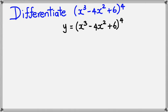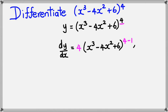Now what do I do here? Bring the power down. So dy/dx would equal... Well there's my 4, it's going to come right in front. 4 multiplied by whatever's inside the bracket, which is x³ minus 4x² plus 6. I've got to take 1 away from the power, so it'll become 4 minus 1. And now I've got to multiply by whatever's inside this bracket here. I've got to differentiate it.